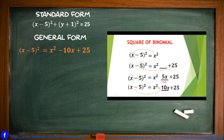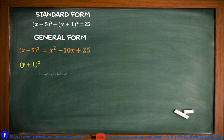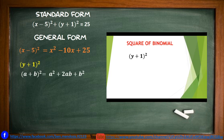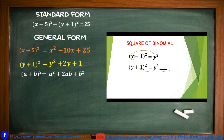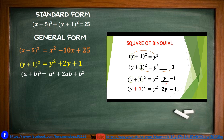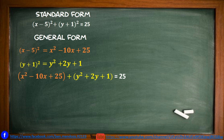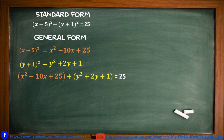We do the same to the quantity of y plus 1 squared. Square of y gives y squared, square of 1 gives 1. The product of y times 1 is y, doubled gives a middle term of 2y. Since the given sign is plus, the middle term is positive. We combine the results: x squared minus 10x plus 25 plus y squared plus 2y plus 1 is equal to 25.